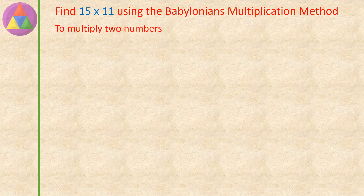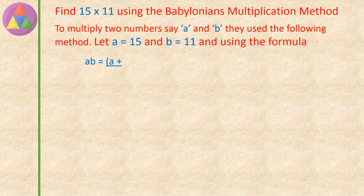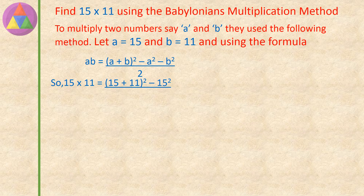To multiply two numbers A and B, they used the following method. Let A equals 15 and B equals 11, and using the formula AB equals A plus B whole square, minus A square, minus B square, divided by 2. So 15 into 11 equals 15 plus 11 whole square, minus 15 square, minus 11 square, divided by 2.